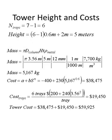For our trays, we have 6 of them. Knowing the diameter of the tray, we can calculate the cost per tray. Substituting into the appropriate equation, the cost of the trays would be $19,450. The total tower cost, not including the reboiler, condenser, or preheater, is slightly less than $60,000.